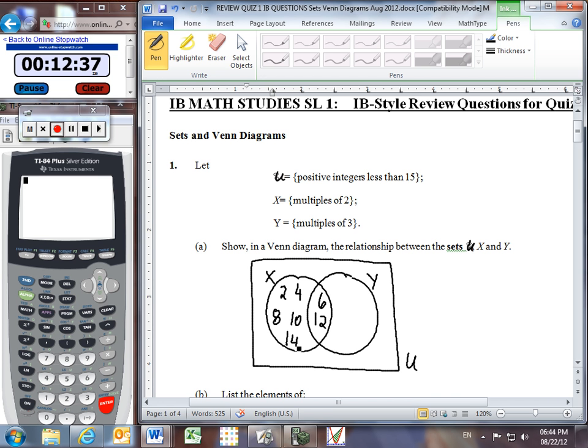Y has got some other multiples of 3 as well. If you think of the multiples of 3 that are positive integers less than 15, you'd probably come up with 3 and 9 as additional values. And of course, neither 3 nor 9 is a multiple of 2.